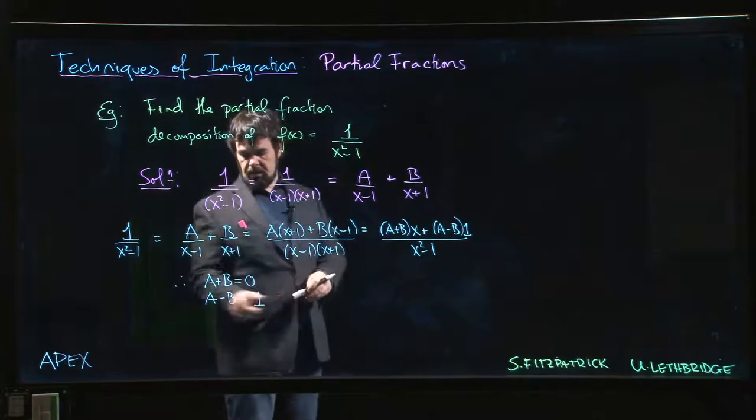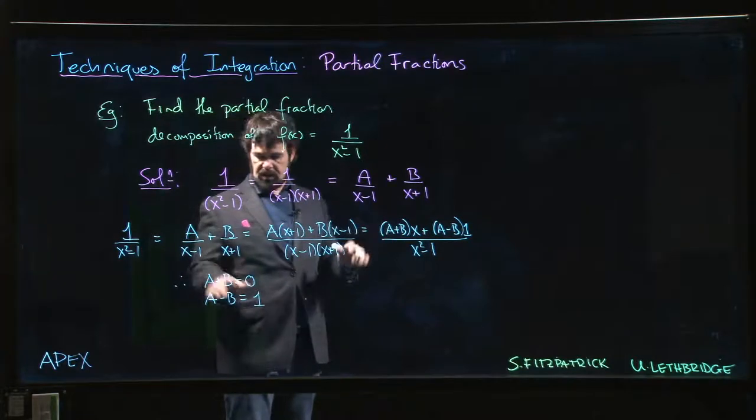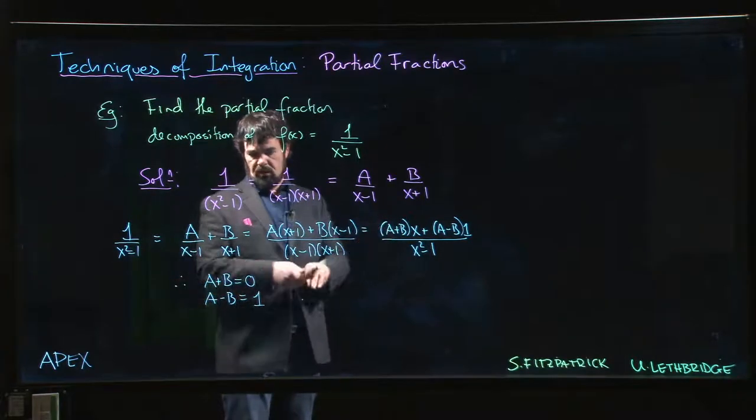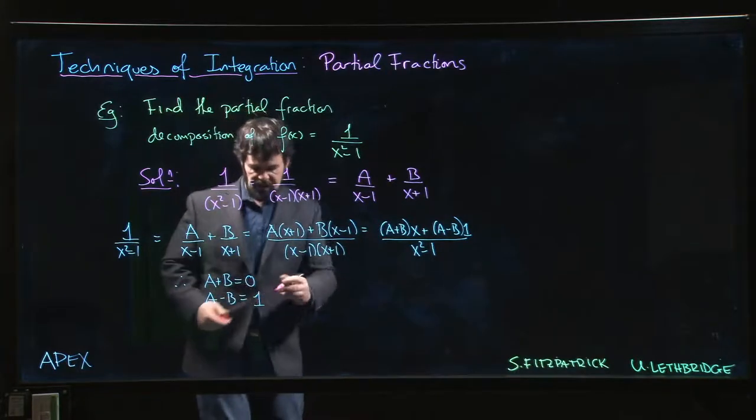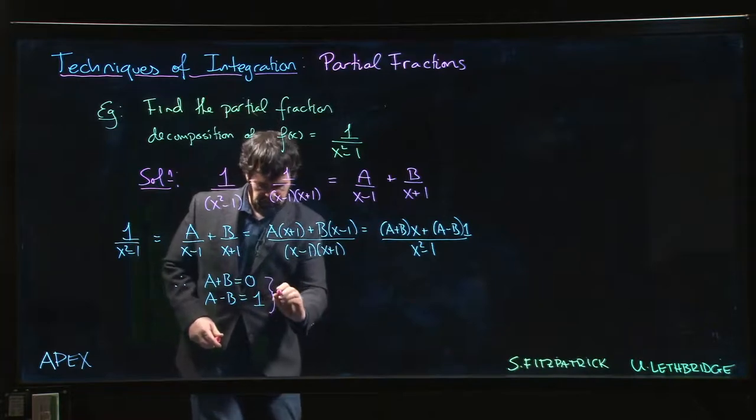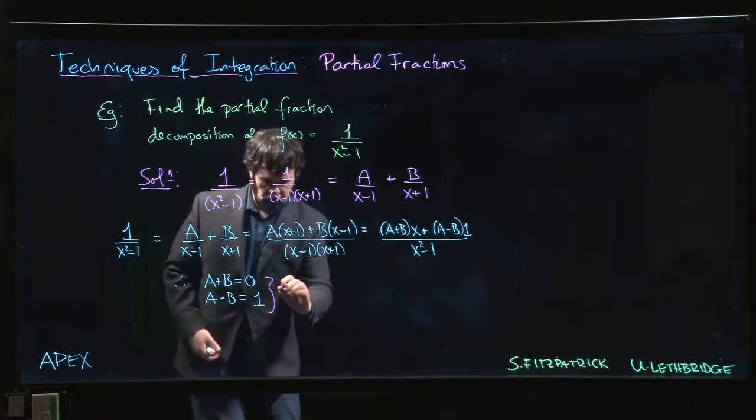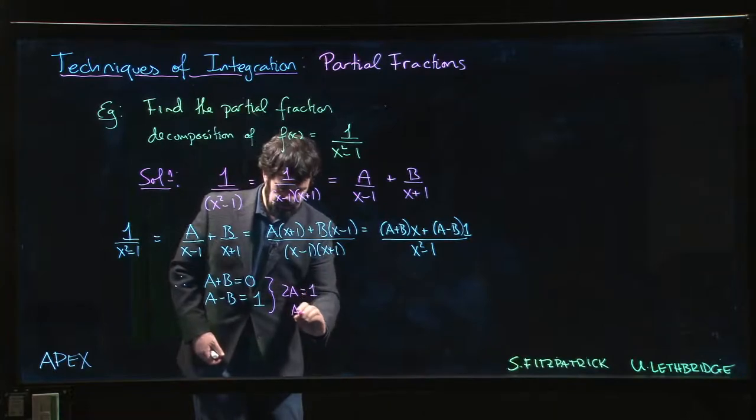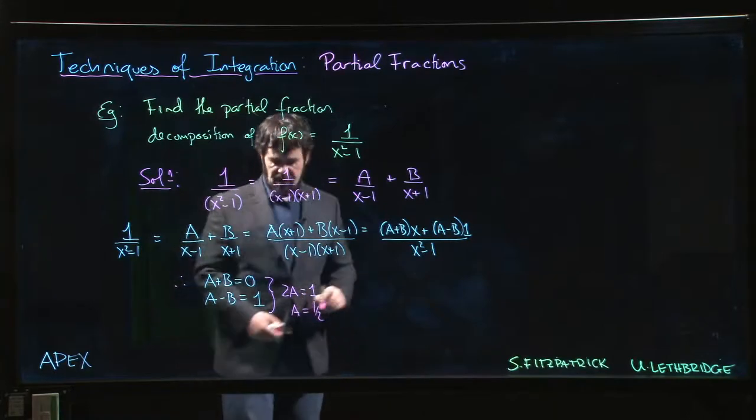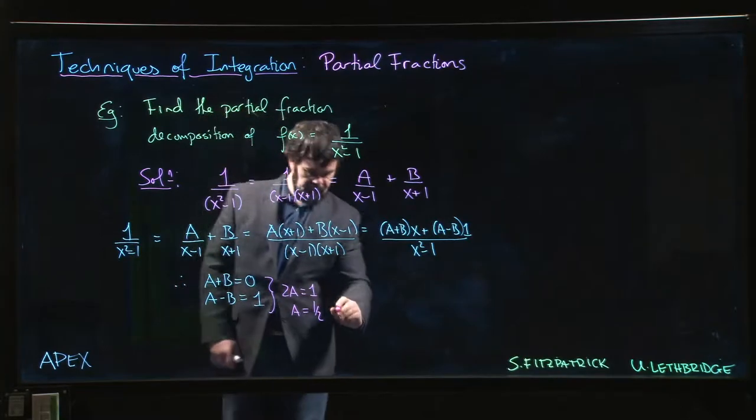Okay, so A and B have to have opposite signs. A straightforward way to do this: you add the two equations. You can kind of guess the answer, but let's be systematic. Adding the two equations gives me 2A equals 1, so that means that A is a half.